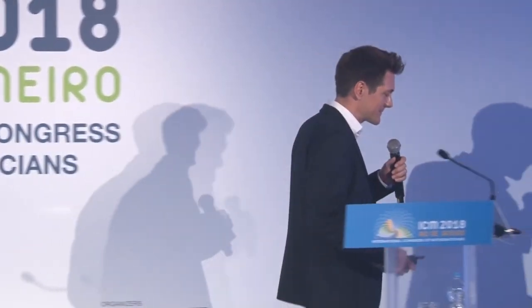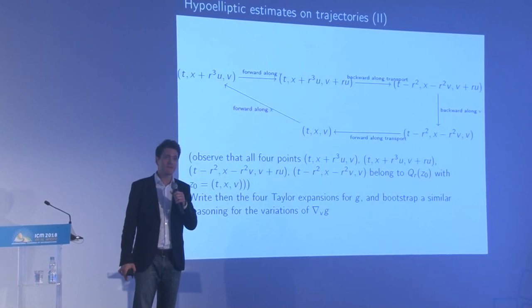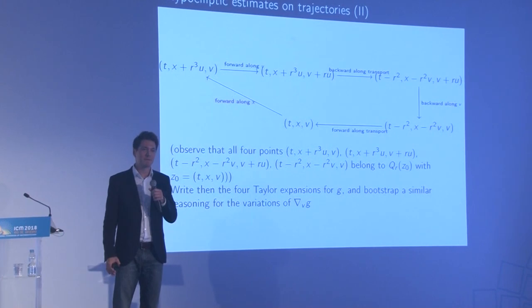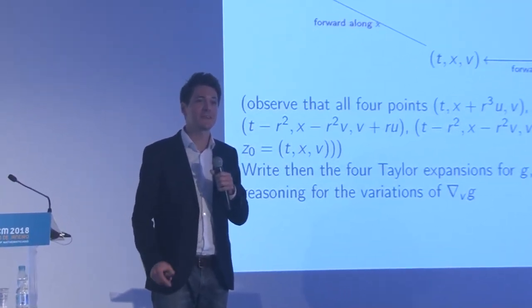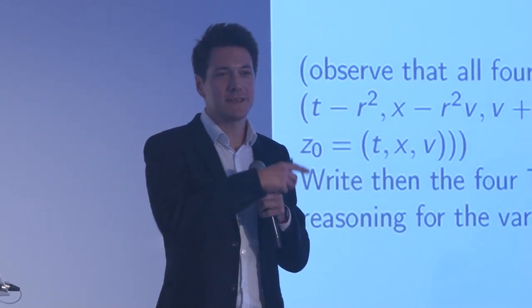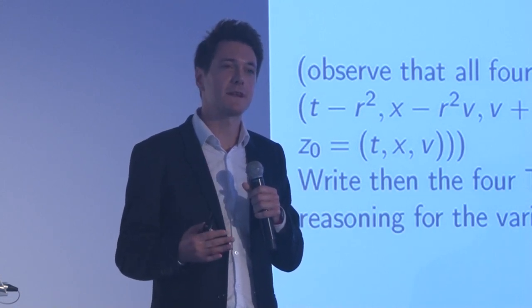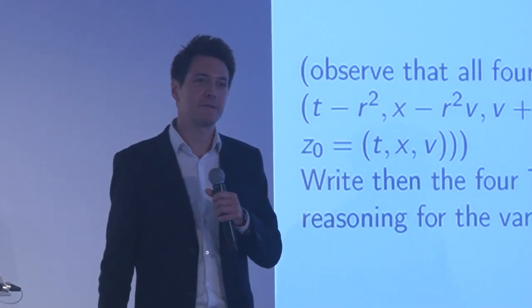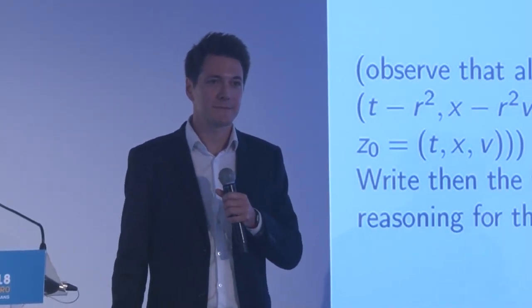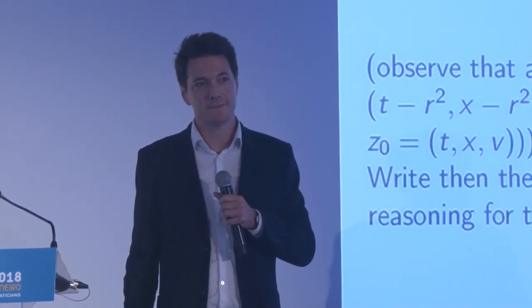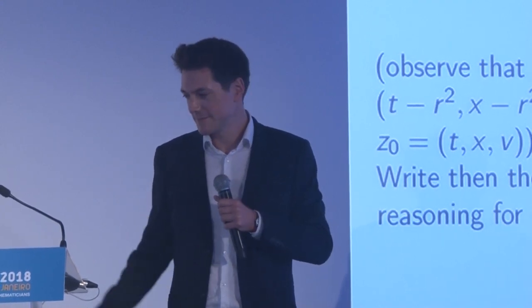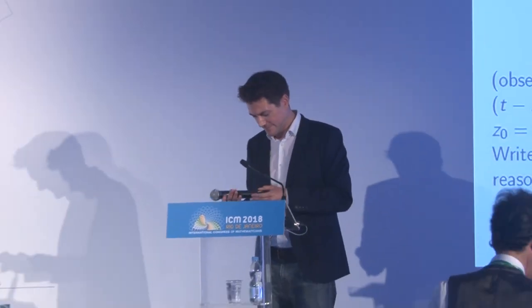A curious and naive question: in your last slide with the five operations, can you switch the order? No, you can't switch them — things are non-commuting, so the order matters. It's precisely because it's not commuting that we can do something. Hypoellipticity is usually presented as commuting vector fields: it's precisely because of the lack of commutativity that you create the missing directions. Let's thank Professor Mouhot again.